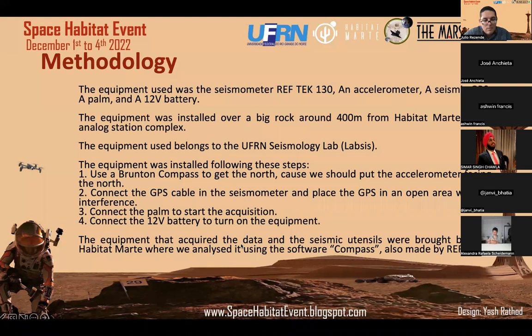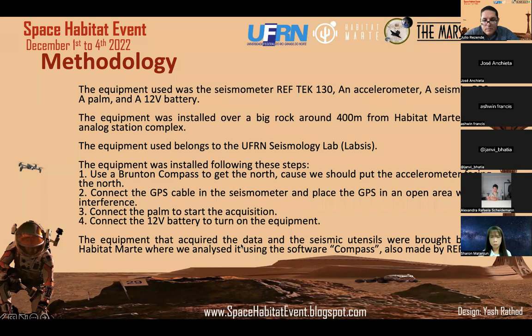Connecting the GPS allows us to record the coordinates of the location, and the equipment operates using those coordinates. We also needed to install it in an open area free from interference — no metal objects nearby. Then we connected the palm to start the data acquisition, and finally connected the 12-volt battery to turn on all the equipment. The acquired seismic data was brought back to the habitat where we analyzed it using software also made by Nanometrics, called Compass, which allows us to transfer all data to a computer and analyze the seismic waves.